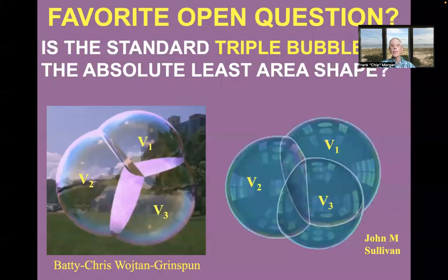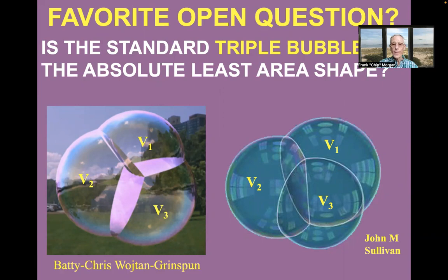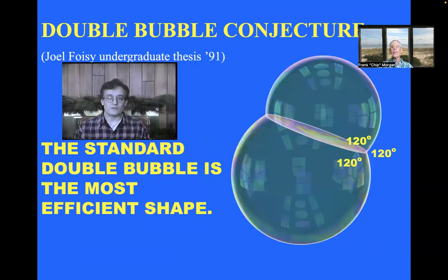In fact, for a long time, my favorite open question was whether the standard triple bubble that you see all the time is the least area way to enclose and separate those three given volumes of air. Until, finally, we realized that we didn't even know if the double bubble was the least area way to enclose and separate two given volumes of air.